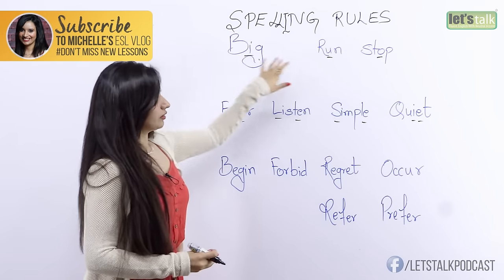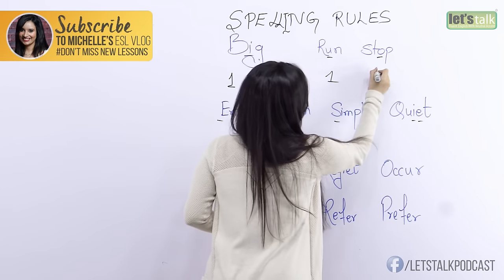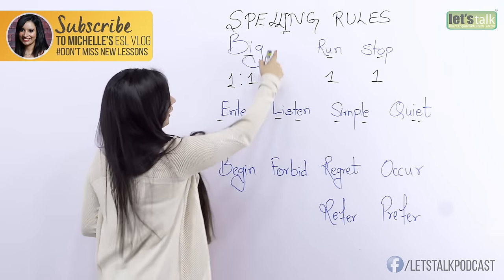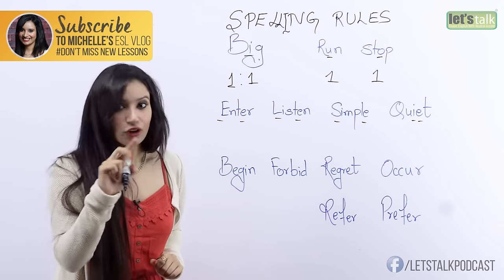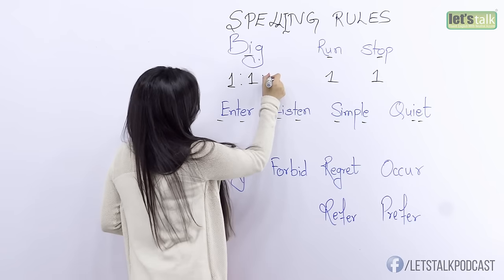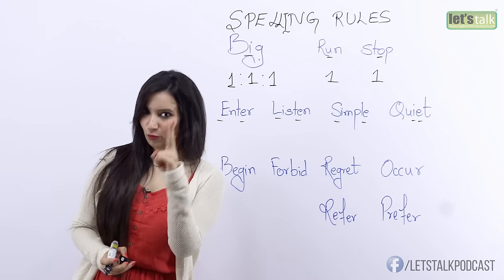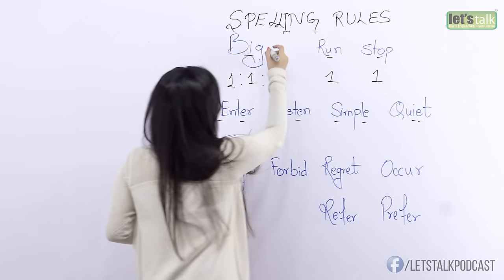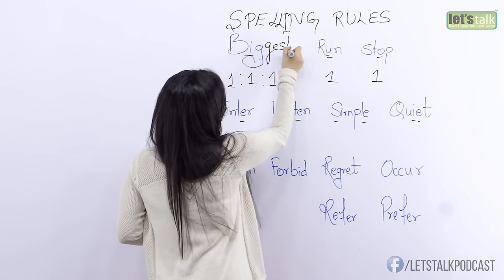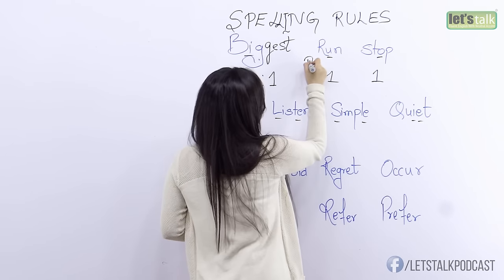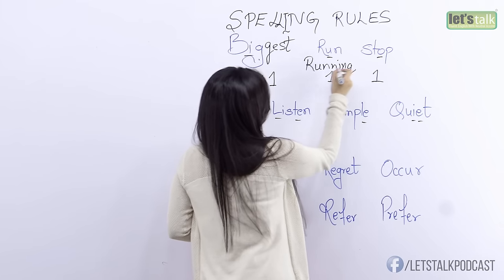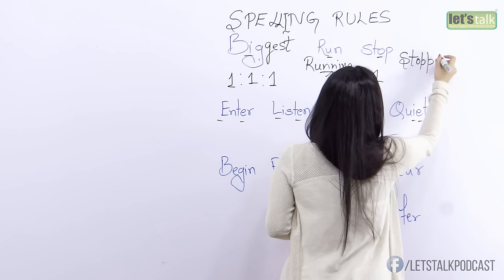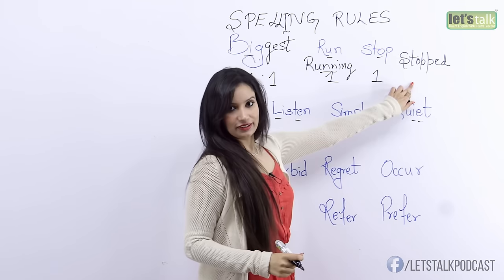So these words all have one syllable each. They have one vowel each and they all end in one consonant — not two consonants, one consonant. So whenever a word has one syllable, one vowel, and ends in one consonant, you double the last consonant. Exactly the right point. So for this word, it's going to be 'biggest,' and for this one, we could say 'running.' So we have doubled the last consonant, and here — 'stopped' — here also we have doubled the last consonant.